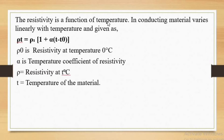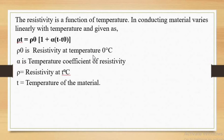The resistivity is a function of temperature. In conducting material, resistivity varies linearly with temperature and is given by the formula: rho = rho_0 × (1 + alpha × (T − T0)), where rho_0 is the resistivity at 0°C, alpha is the temperature coefficient of resistivity, T is the temperature, and T0 is the reference temperature at 0°C. Resistivity at temperature T is directly proportional to the temperature difference (T − T0).